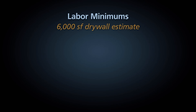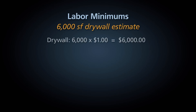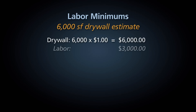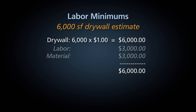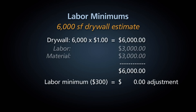Now let's take a look at the estimate for 6,000 square feet of drywall. We start with a line item that gives us 6,000 square feet at $1 per square foot for a total of $6,000. Since $0.50 of each square foot is labor, the total estimated labor charge for this drywall repair is $3,000. As $3,000 far exceeds our needed minimum labor charge of $300, no additional labor charge is added. As such, the total estimated charge for this drywall repair will be $6,000.